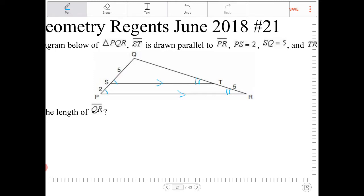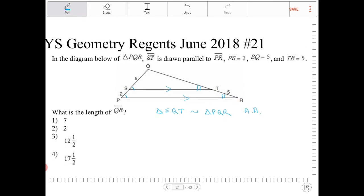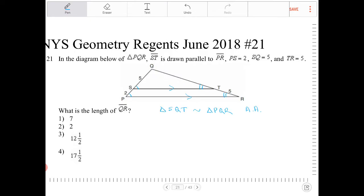And why is that important? Well, then we have triangle SQT is going to be similar to triangle PQR because of angle-angle theorem. If you have two angles that are congruent, two corresponding pairs of angles that are congruent, then the two triangles are deemed similar.